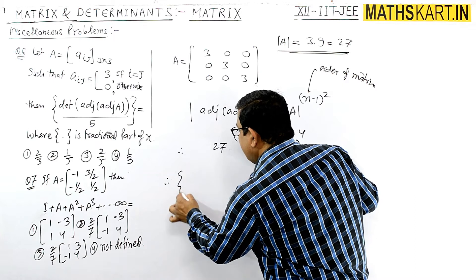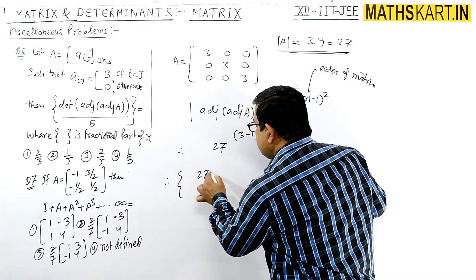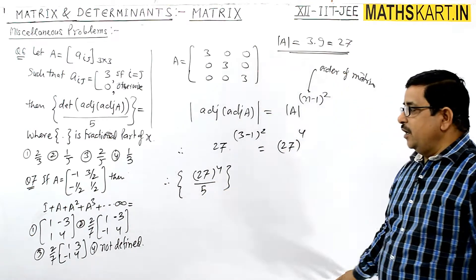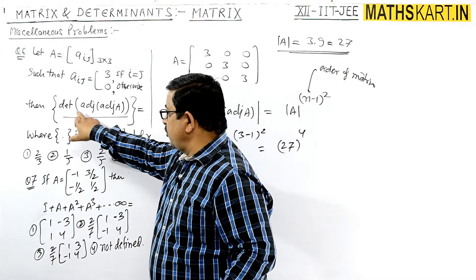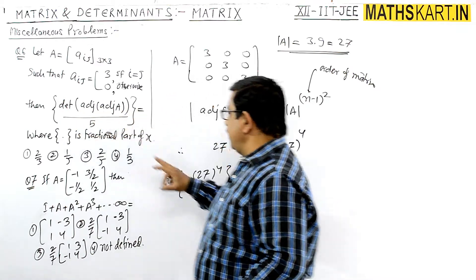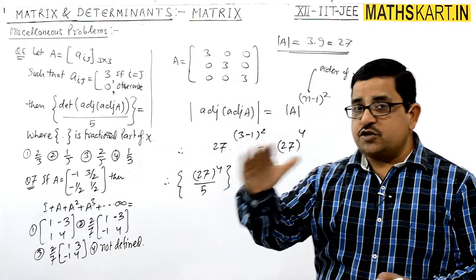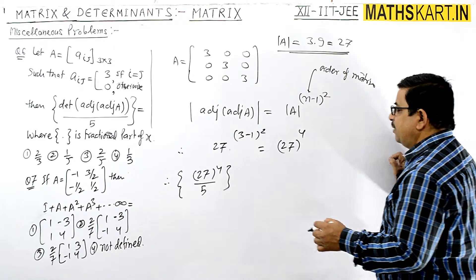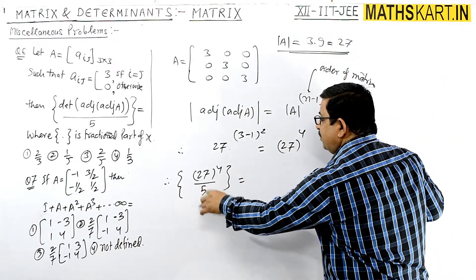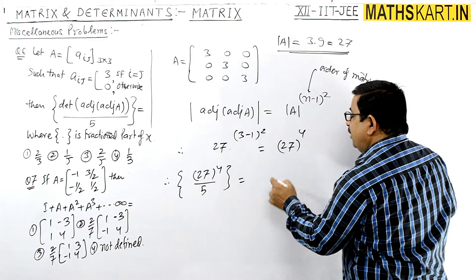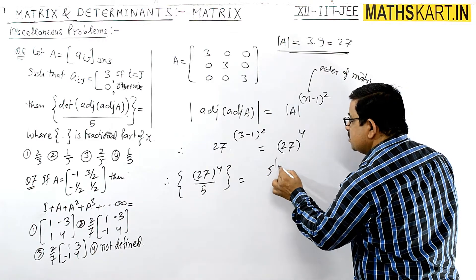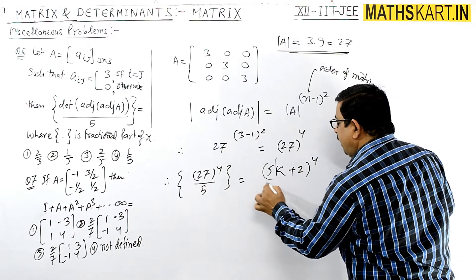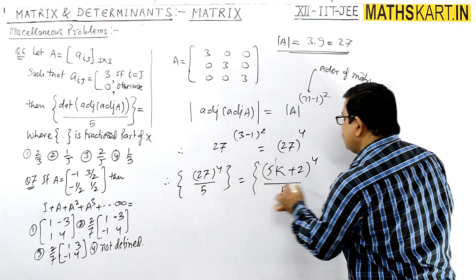Now we have to find the fractional part. The fractional part is of 27 to the power 4 divided by 5. The entire value of determinant of adjoint of adjoint of A is 27 to the power 4, and it is to be divided by 5 to find the fractional part.